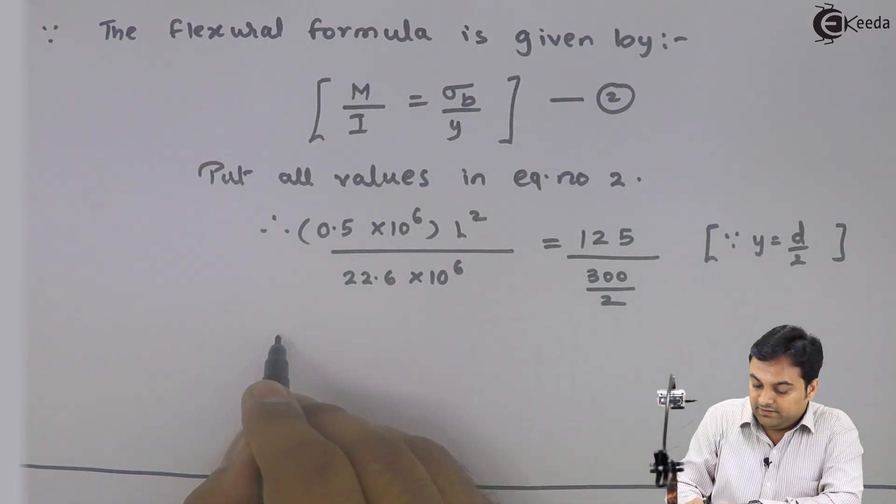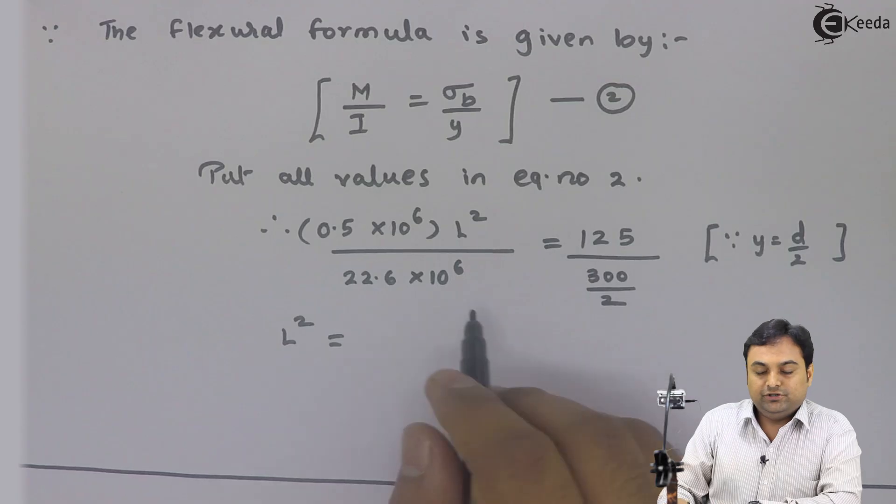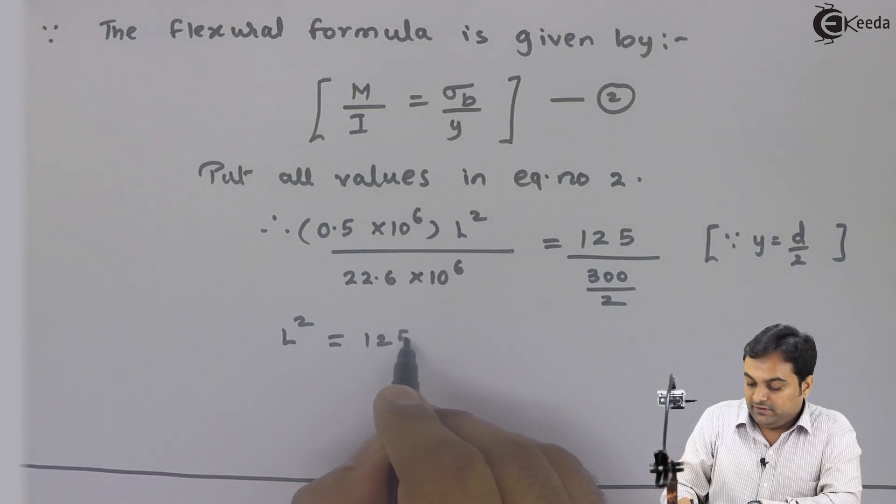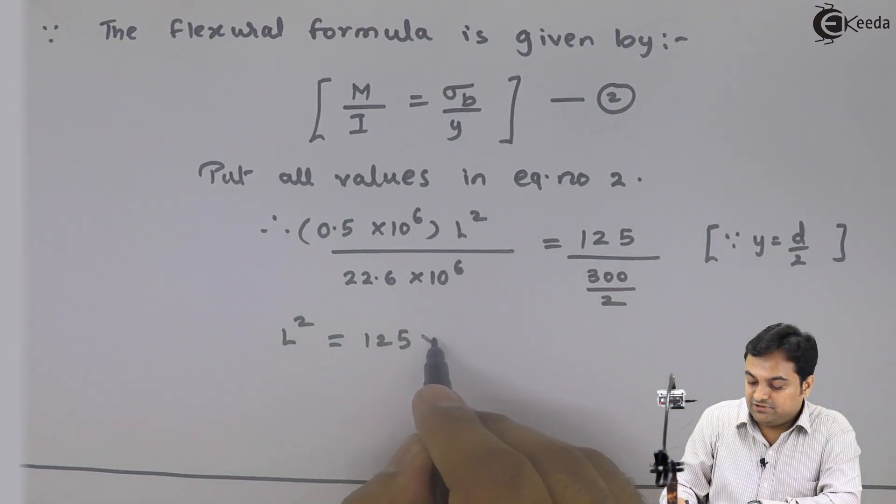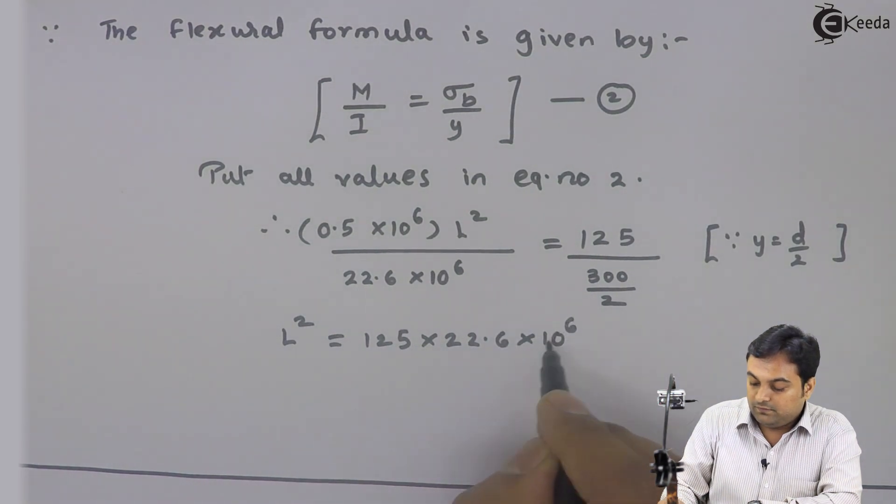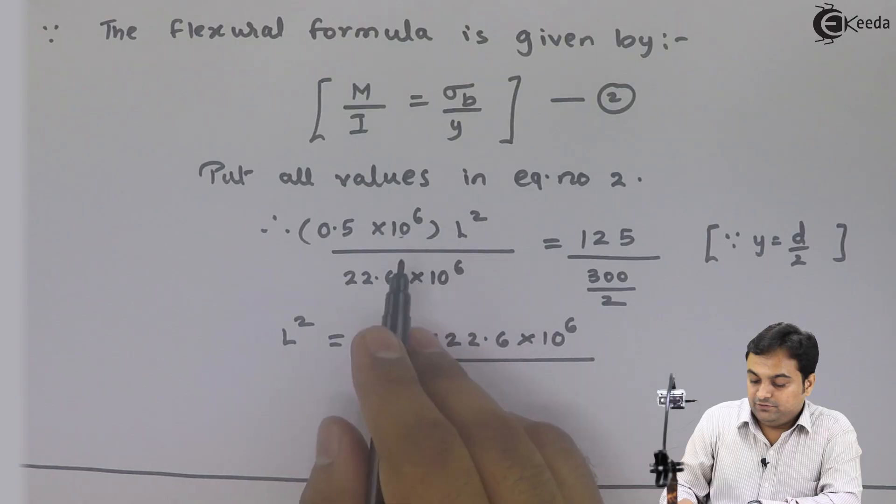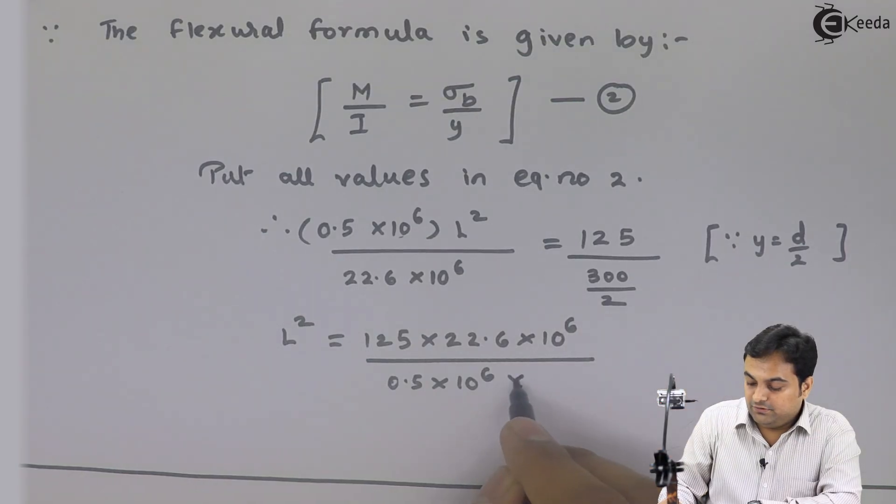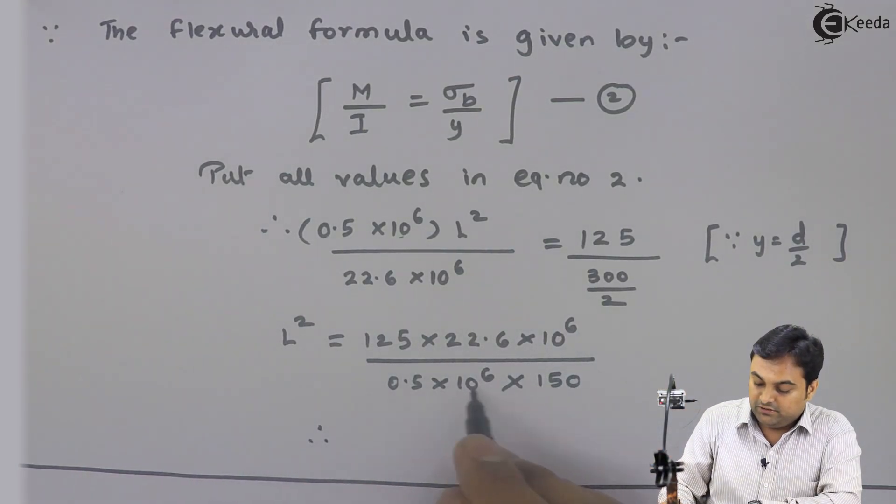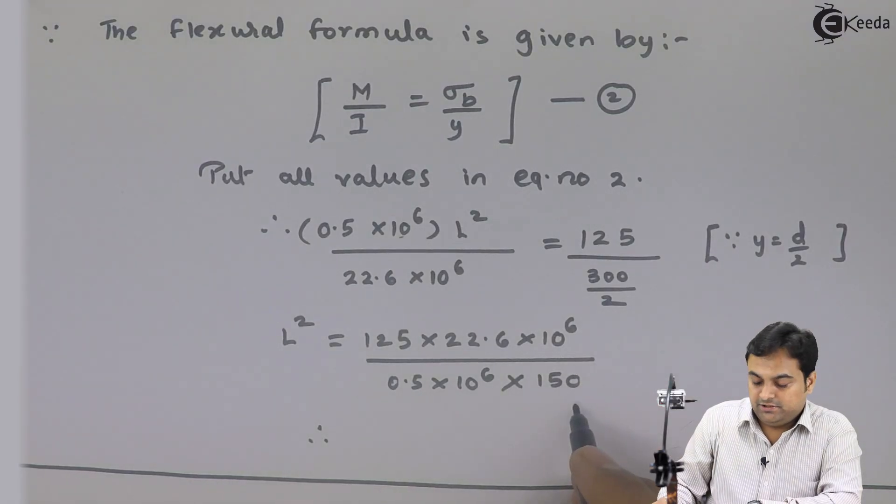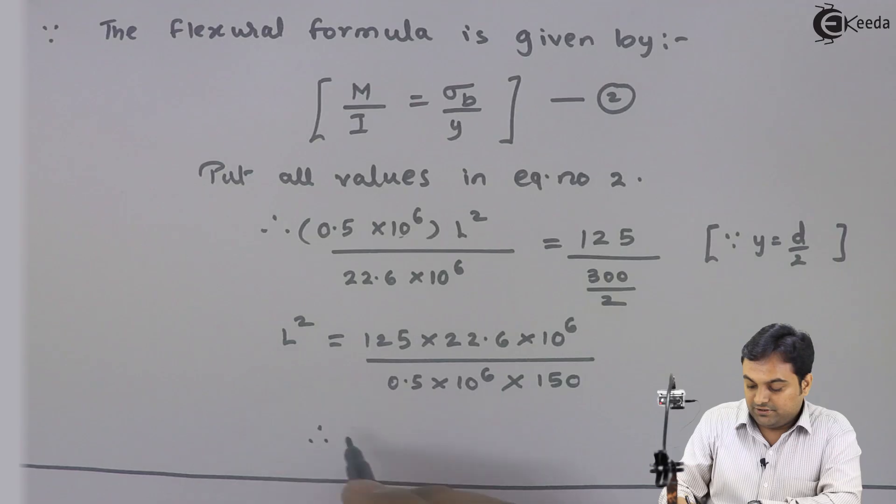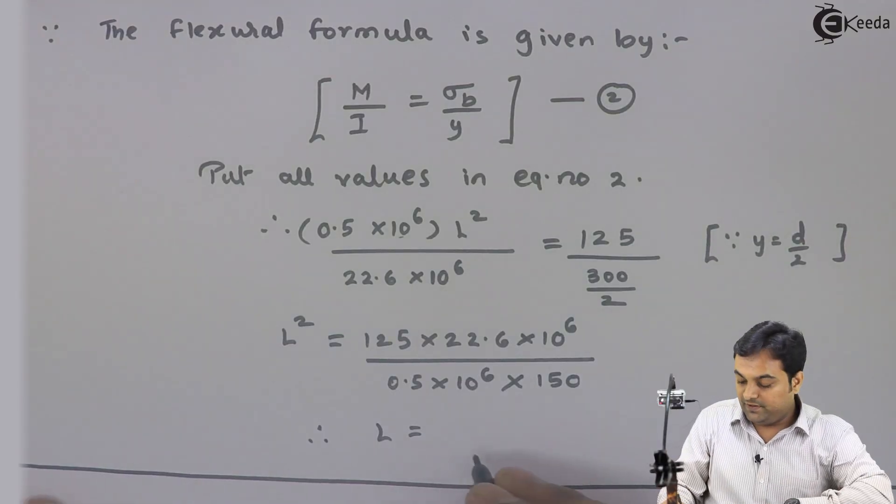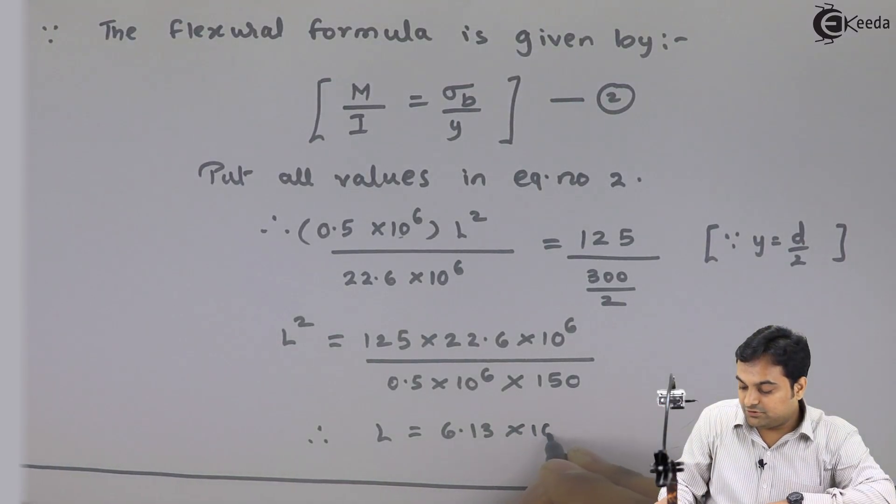Now I would be calculating the value of L. To calculate this, I will have to shift all terms on one side, keep L on the other side. So it is L² = 125 × 22.6 × 10⁶ divided by 0.5 × 10⁶ × 150. If I calculate the numerator, divide by denominator, and calculate the square root of that answer, I would be getting L directly in mm. And my answer of L comes out to be 6.13 × 10³ mm, or you can say it is 6.13 meters.